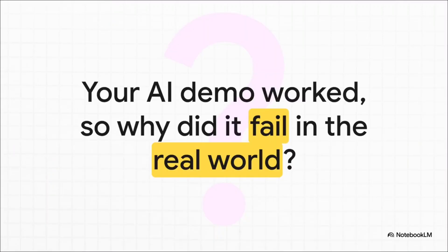Picture this. You spent weeks, maybe months, building an AI demo. It works perfectly. Every question you ask, it nails. You show it to your team, to your boss. Everyone's blown away. Then you push it into the real world, and it just falls apart. It fails, and it fails badly. So what gives? Why does this happen over and over again? That's the big question we're answering today, and the story starts with something called Naive RAG.